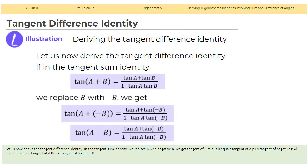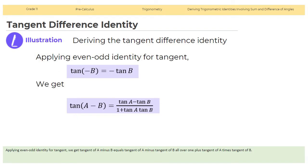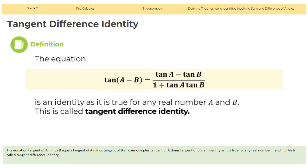Let us now derive the tangent difference identity. In the tangent sum identity, tangent(a plus b) equals (tangent a plus tangent b) over (1 minus tangent a tangent b), we replace b with negative b. Applying the odd identity for tangent, tangent(negative b) equals negative tangent b. We get tangent(a minus b) equals (tangent a minus tangent b) over (1 plus tangent a tangent b). This is called the tangent difference identity.